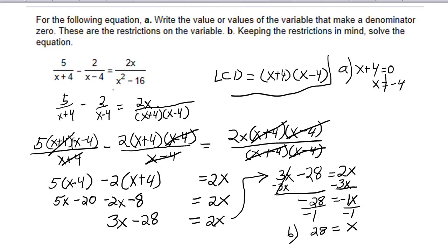And then I'll set x minus 4 equal to 0. So, x minus 4 equals 0, so x equals 4. Okay. So, x cannot be allowed to equal positive 4 either. And then setting this x squared minus 16 equal to 0 means I'm setting x plus 4 times x minus 4 equal to 0.